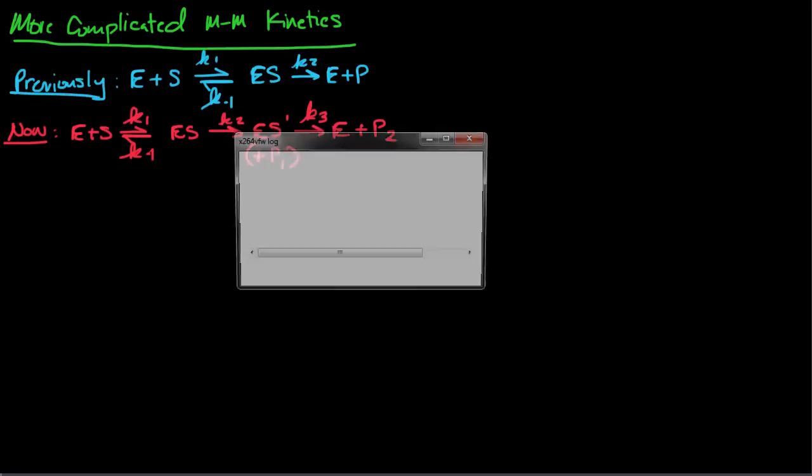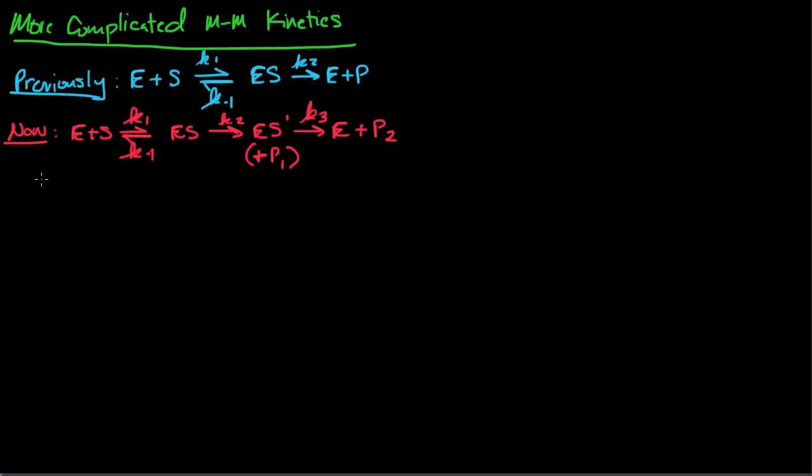So the last thing we're going to talk about before discussing inhibitors is a very complicated example of Michaelis-Menten kinetics. Previously, we just had E plus S gives you your complex, and then the complex has one step to break up into the enzyme plus the product. This was the simplest case.